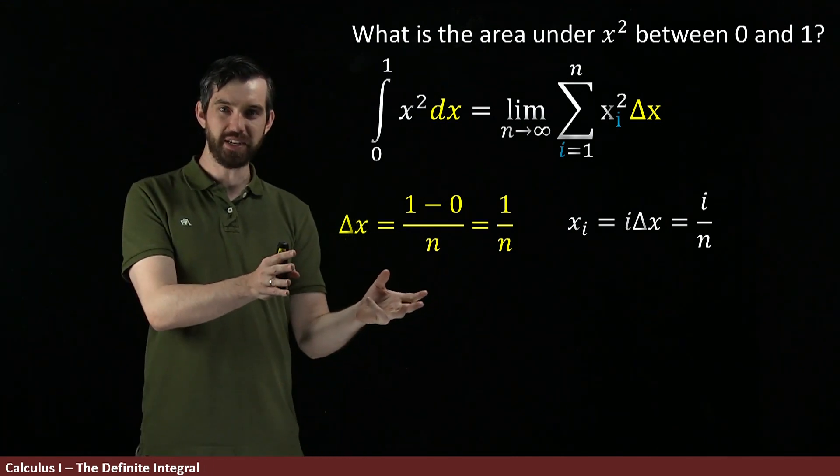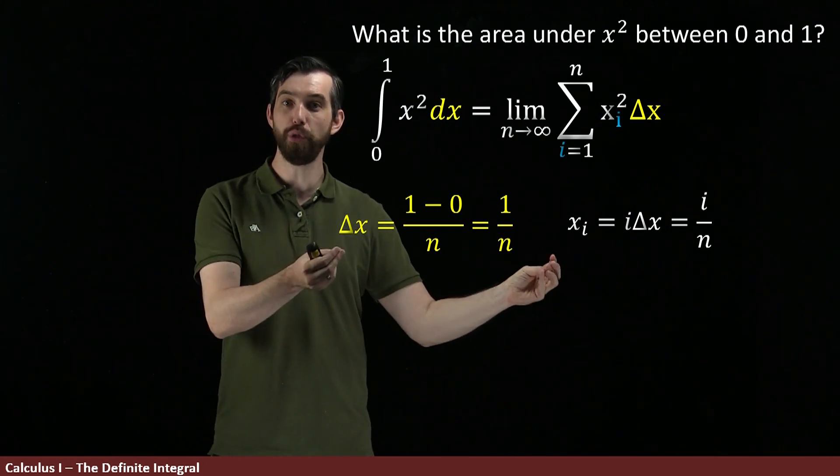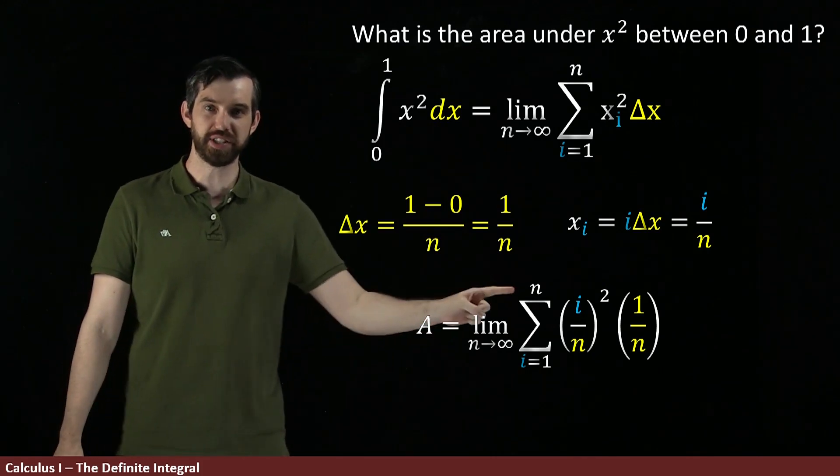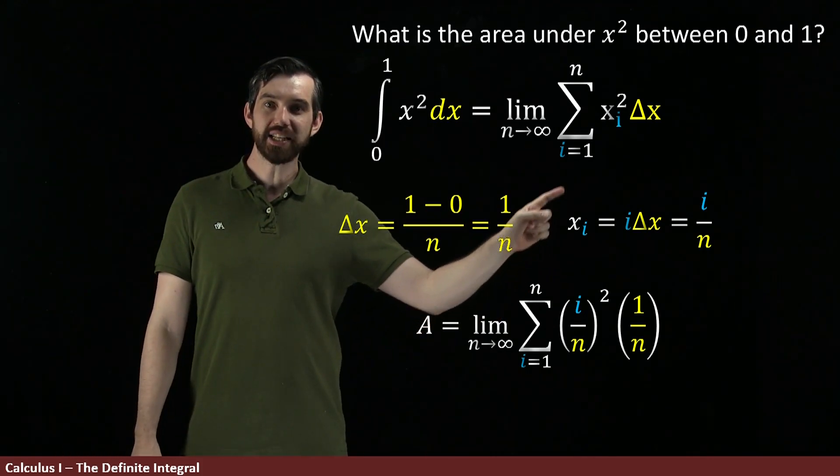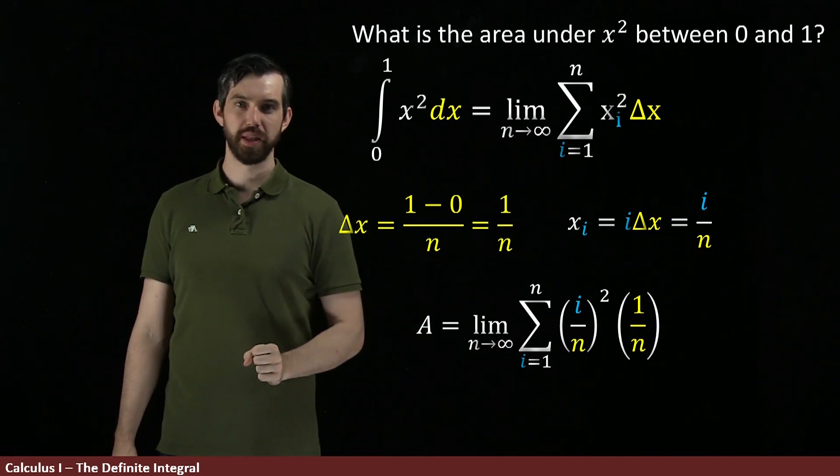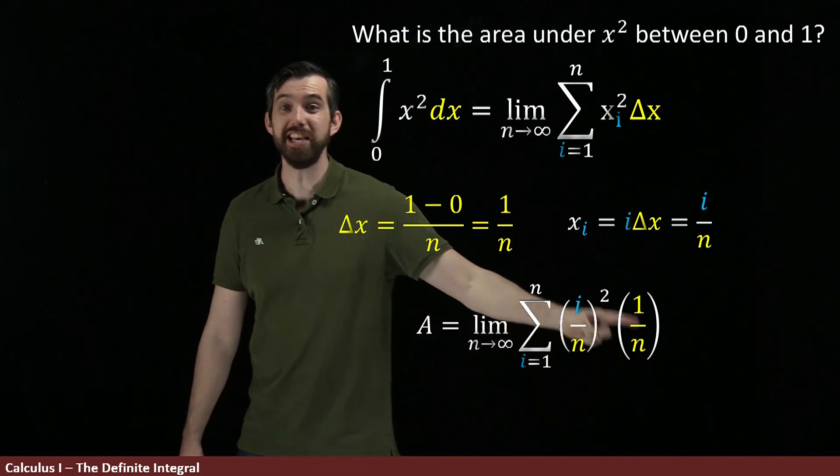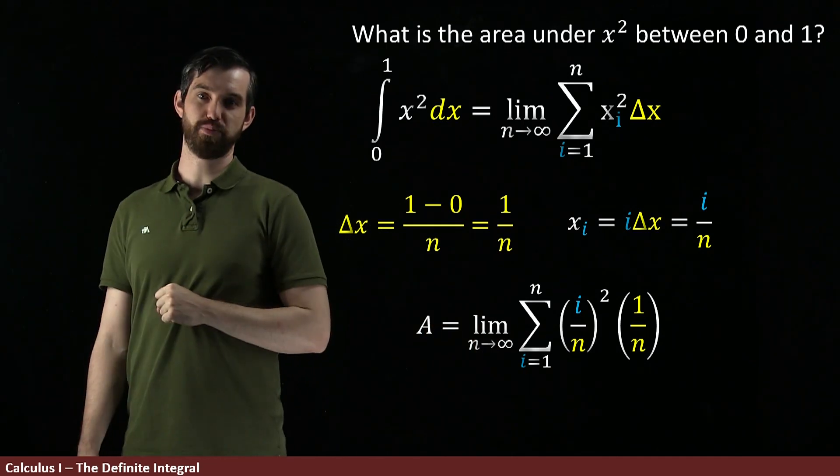Okay, so I've got this delta x, I've got this xi. Let's take both of them and put them into my formula here. So what I get for this area, the limit of the sum, it's the xi squared, so I've put in my xi squareds, and then it's the delta x, that's the 1 over n, so I multiply it there, and it's this big, messy, gnarly expression.